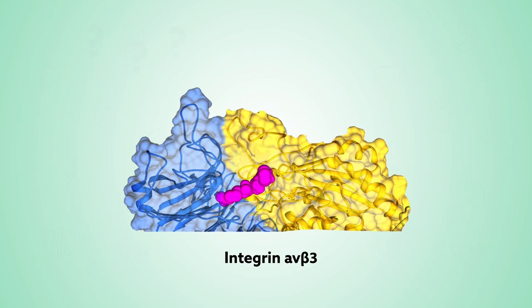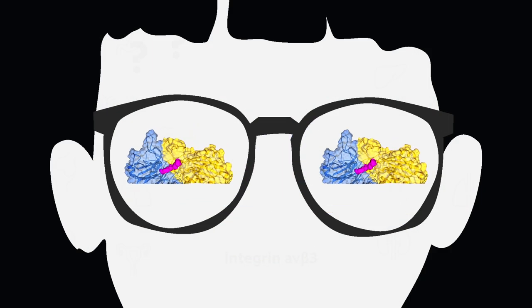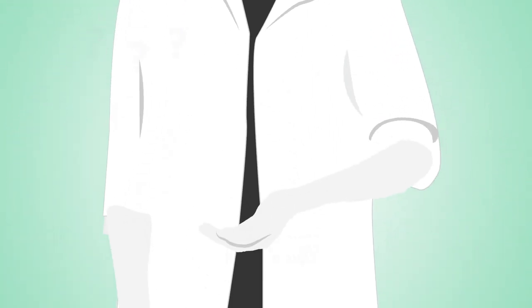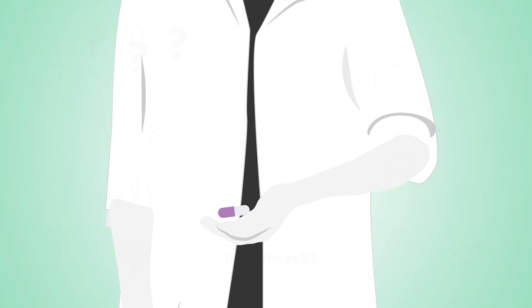Integrin alpha-V beta-3 has therefore long been in the sights of scientists looking to develop potent drugs that prevent inflammation and the formation of new blood vessels.